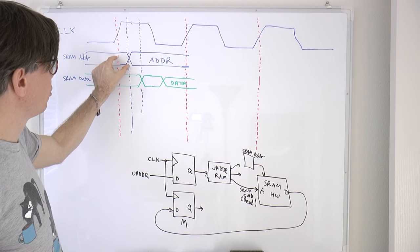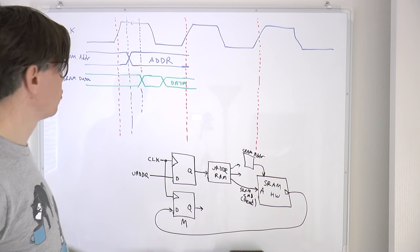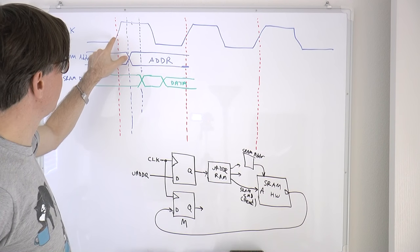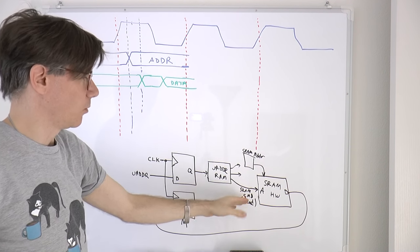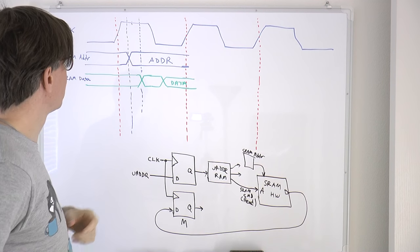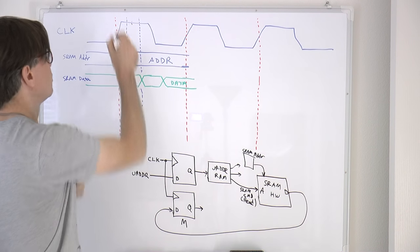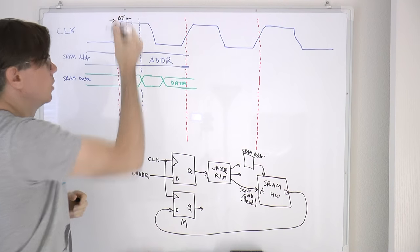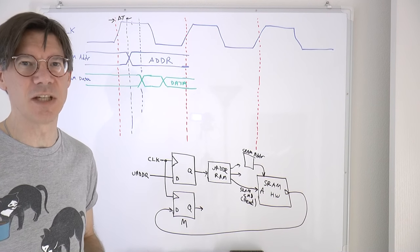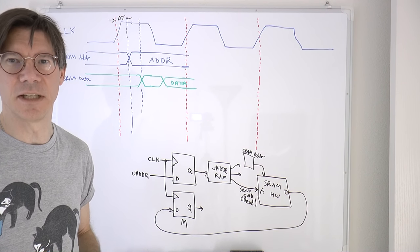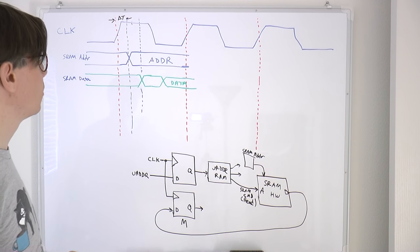There will be a certain amount of time for all of this microprogram logic to get from the positive edge of the clock to where the address we want to read, along with the command, gets sent to the SRAM. We don't know how much that is — just some delta T. Hopefully it's quite fast because this is an FPGA, and internally FPGAs have propagation delays under a nanosecond.